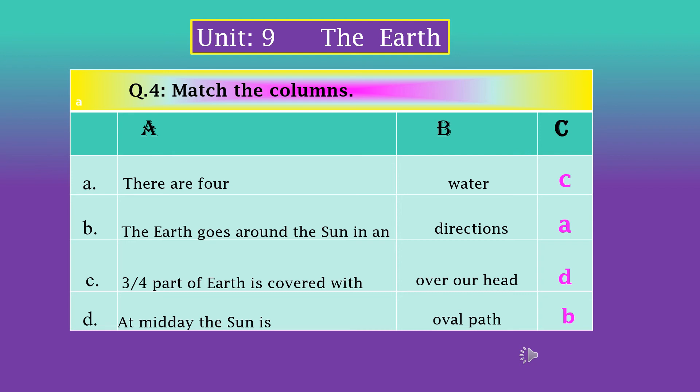Now b: 'The Earth goes around the Sun in an oval path.' Yes, in an oval path! So it is b sentence, so you have to write in front of oval path in column B, you have to write b.